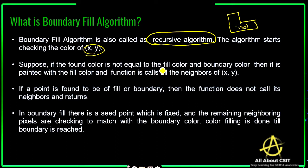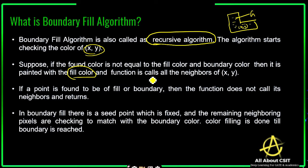Suppose the found color is not equal to the fill color — the color present inside the polygon — and not equal to the boundary color, then it is painted with the fill color. Suppose the fill color is green, try to fill that pixel with green. Then the function calls all the neighbors of (x, y). If a point is found to be a fill or a boundary color, then the function does not call its neighbors and returns.